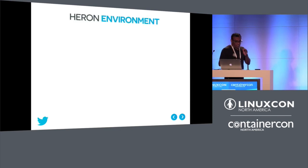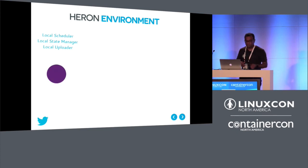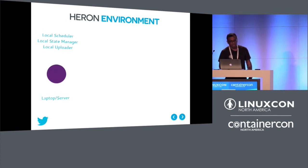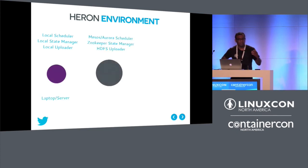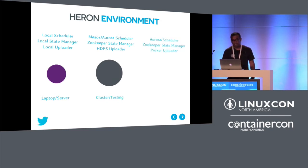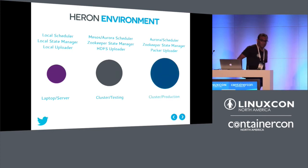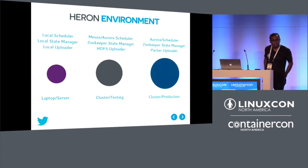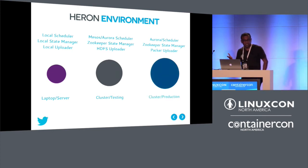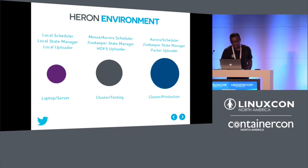Within Twitter, Heron runs with a local scheduler for development, and Mesos/Aurora with ZooKeeper and HDFS for testing. For production, we use the Aurora scheduler, ZooKeeper state manager, and Packer for versioning topologies. In open source, it runs on several other schedulers as well.